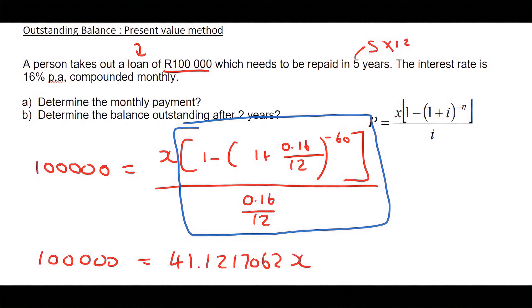On the Casio calculators, you could just say 100,000 divided by answer, which will be your previous answer. And we should get an answer of 2,431 rand and 81 cents if we round to two decimal places.